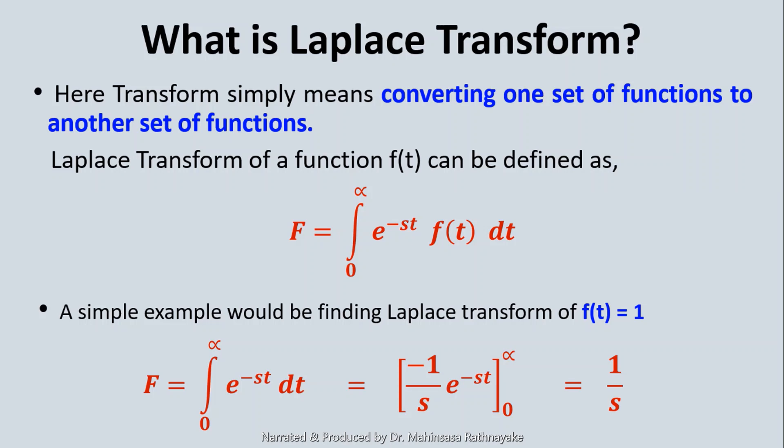We can integrate this function and we get, from zero to infinity, minus one over s times e to the power of minus st. Substituting the limits from zero to infinity, we finally end up with one over s. So the Laplace transform of f(t) = 1 is 1/s. This is how we can apply the definition to understand how Laplace transforms work.